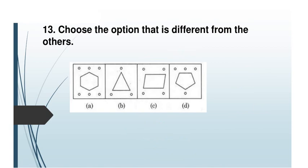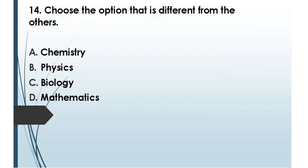Next: choose the option different from the others. One figure is a hexagon with 6 dots, one is a triangle with 3 dots, one is a parallelogram with 4 dots, and one is a pentagon with 4 dots — but a pentagon should have 5 sides. The odd one out is option D. Then: chemistry, physics, biology, mathematics — which is different? Mathematics, because chemistry, physics, and biology are branches of science, while mathematics is not.